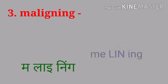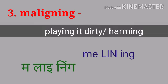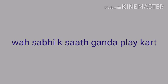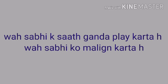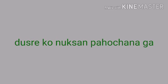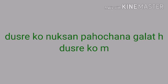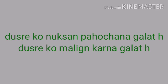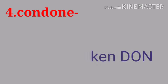The third word is 'Malign,' meaning to harm or damage someone — तकलीफ पहुंचाना, नुकसान पहुंचाना. In a sentence: वो सभी को malign करता है (He maligns everyone). दूसरों को malign करना गलत है (It is wrong to malign others). Malign is a very negative word, often used in the context of cheating between couples.